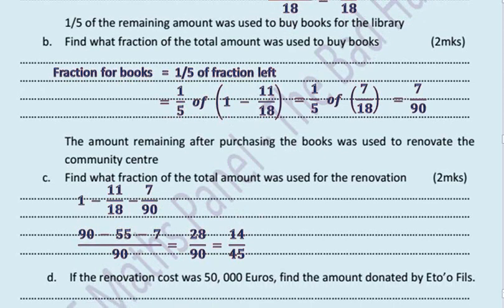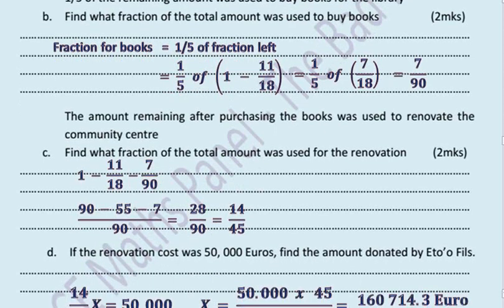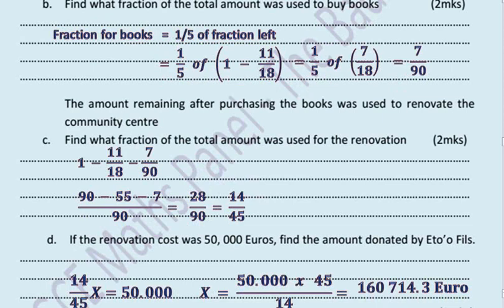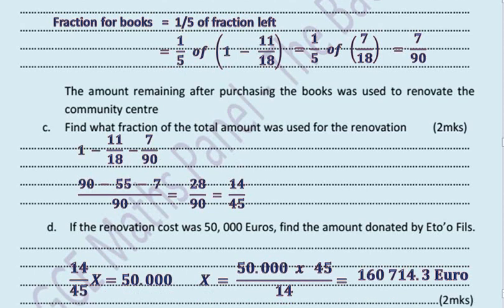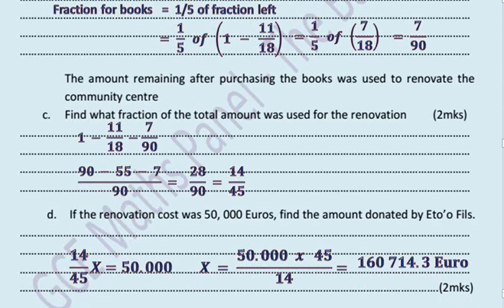If the renovation cost was 50,000 euros, find the amount donated by Eto'o Fils. So let this amount be X and 14/45 of X equals 50,000. And solving for X gives us 160,714.3 euros.